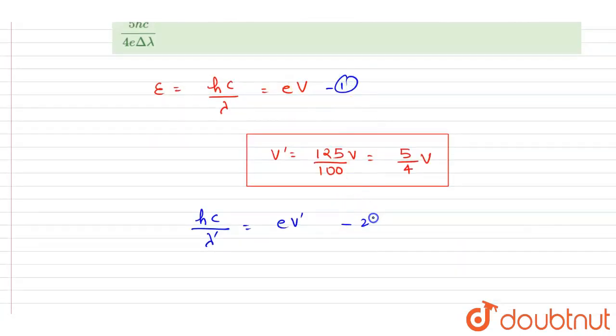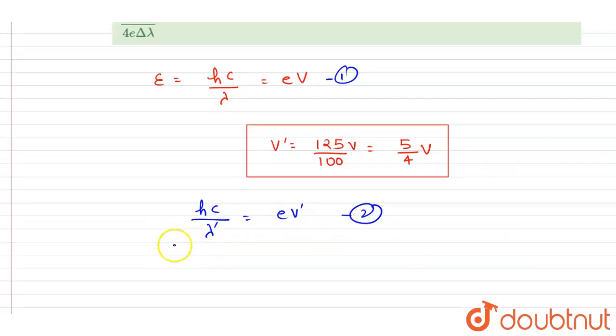So if you calculate the new lambda, it is V dash. So if you see, let's say this is equation one, this is equation two.